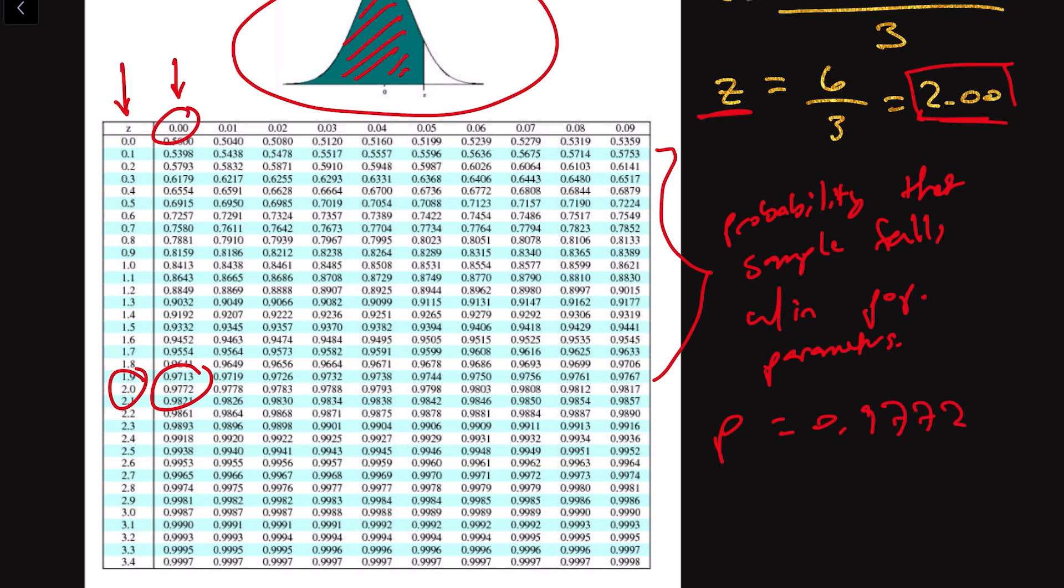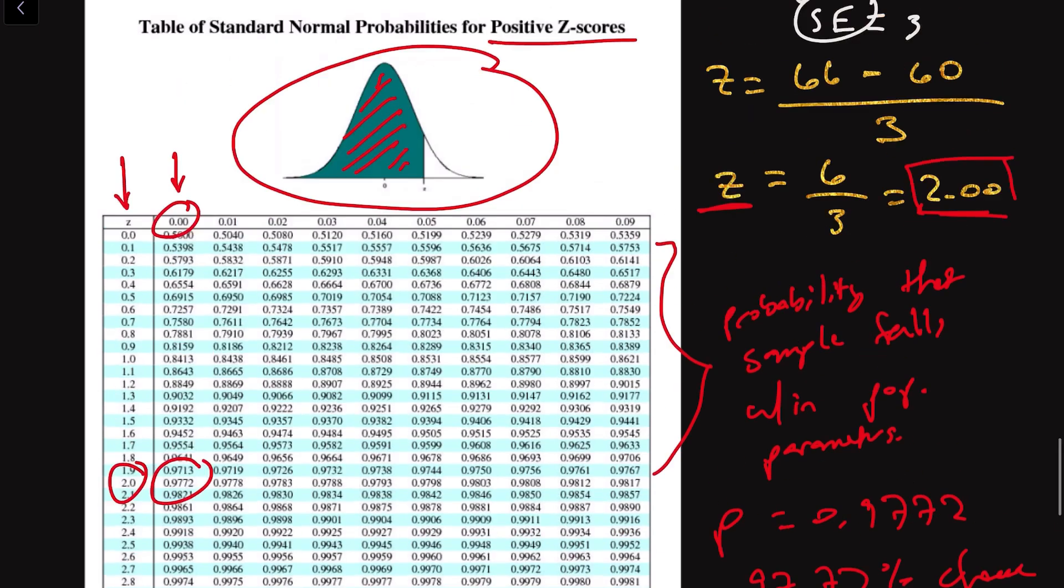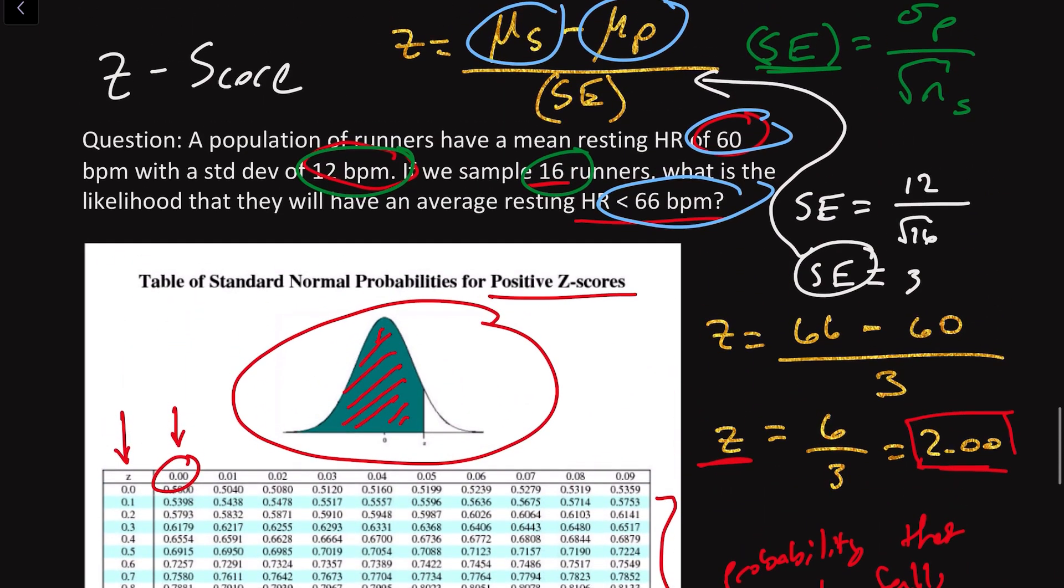What this means is that we have a 97.72% chance that if we randomly sampled 16 runners in this population, their resting heart rate is going to be less than 66 beats per minute.